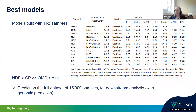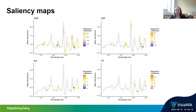The best models were then used to predict the full dataset of 15,000 samples for downstream analysis with genomic prediction. These are saliency maps for each trait — you see the mean spectra with the applied combination of spectral and mathematical treatments, and regression coefficients are plotted according to their contribution to the model. The highest positive contribution is marked in orange and the highest negative contribution is marked in blue.